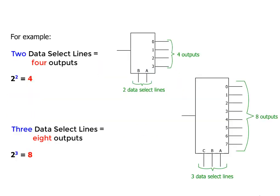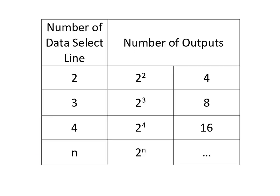For example, if a demultiplexer has two data select lines, then it will have 4 outputs. 3 data select lines will result in 8 outputs. 4 results in 16 outputs, and so on.